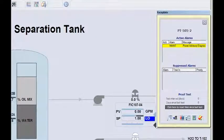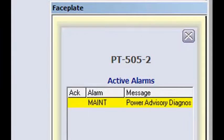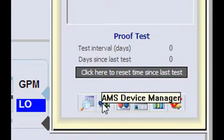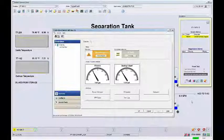Clicking on the alarm displays the transmitter faceplate with the power advisory diagnostic alarm shown. By clicking on the AMS device manager icon, you can open the diagnostics window to see the device status and recommended actions.